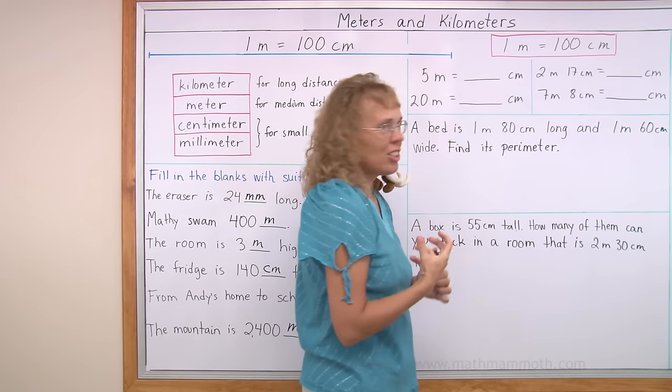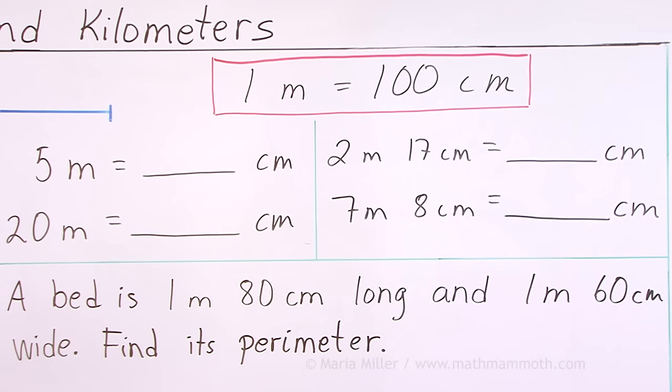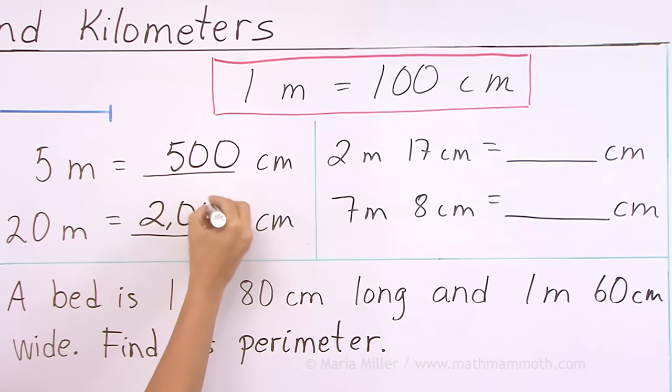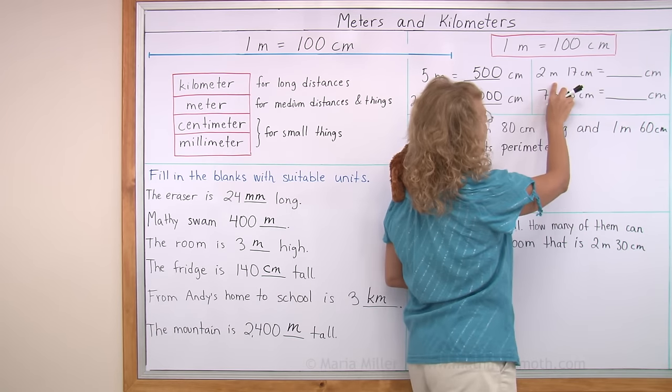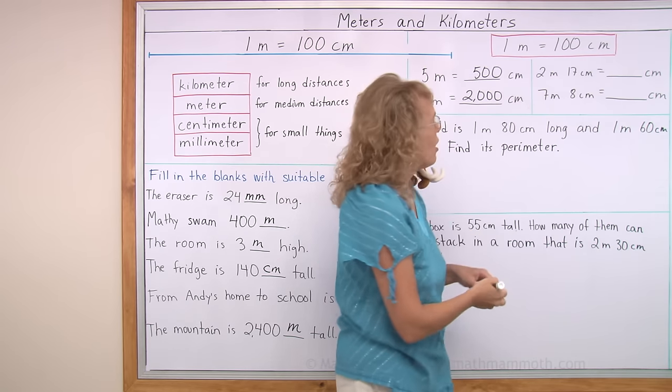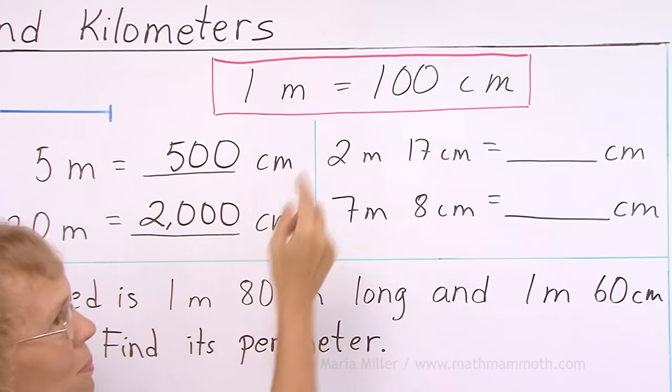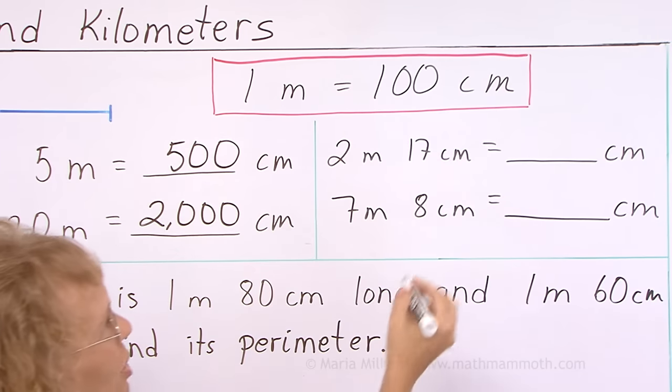One meter is 100 centimeters, like I told you. How about five meters? How many centimeters would it be? That should be pretty easy. It is 500, yeah. How about 20 meters? If that's difficult, think about 10 meters first. 10 meters would be double that, or 1,000 centimeters. And then 20 meters would be double that, or 2,000 centimeters. And then 2 meters, 17 centimeters into centimeters. 2 meters would be 200. And so we get 217.